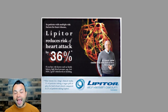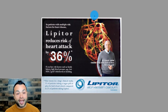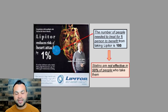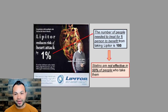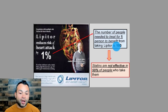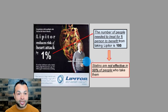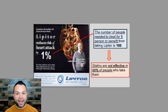If you look at the absolute risk reduction — which is the risk difference, and happens to be the most useful way of presenting research results to help your decision-making — that 36% actually drops to 1%. So what this means is that out of 100 people who take Lipitor, one person is going to benefit. This is known as the NNT, the number needed to treat for a desired outcome. The number of people needed to treat for one person to benefit from taking Lipitor is 100. Or you could say Lipitor is not effective in 99% of the population. A higher NNT indicates that treatment is less effective.